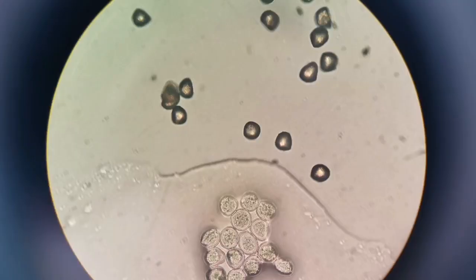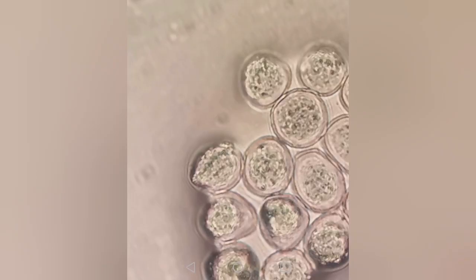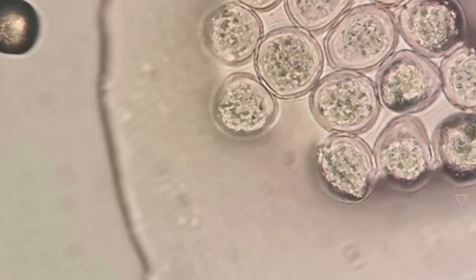When I showed this slide — the image I took from this part of it — to my wife, she immediately pointed to this pollen and something inside it. It is a dividing chromosome of a yew tree pollen. She was so clever — she showed it to me.